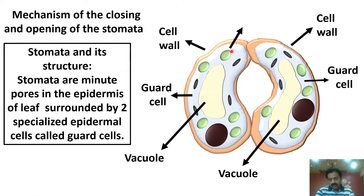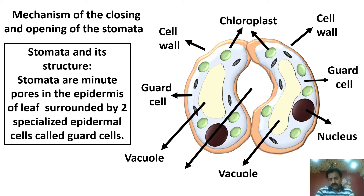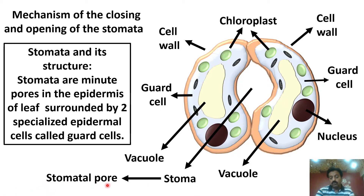The green organelles visible here, dear students, are chloroplasts. In guard cells, chloroplasts are present — it means they are able to perform photosynthesis and can make their own glucose. Here you can also see the nucleus of the guard cell, and in the middle there is a pore — an aperture — which is called the stoma, also called the stomatal aperture.